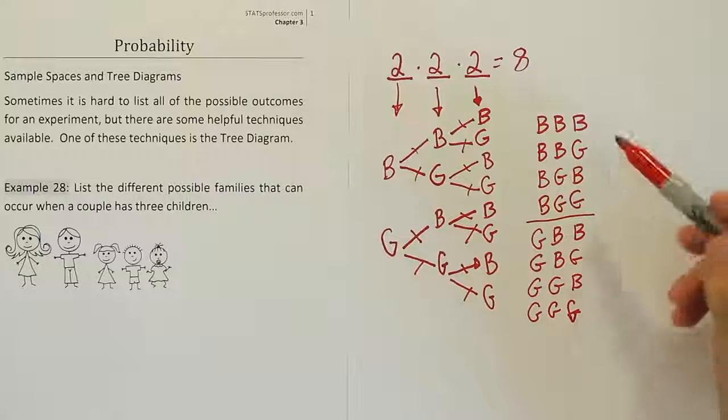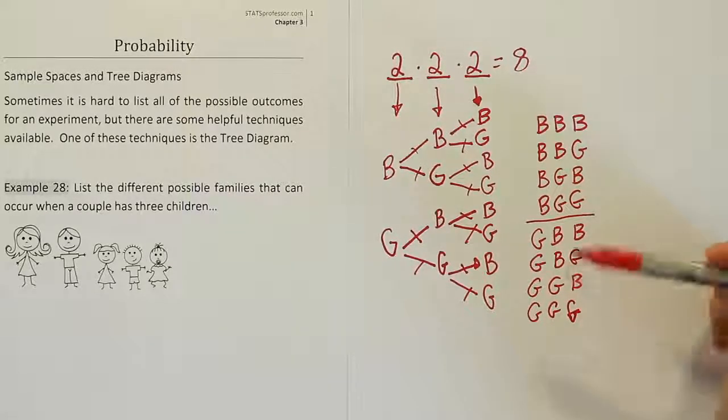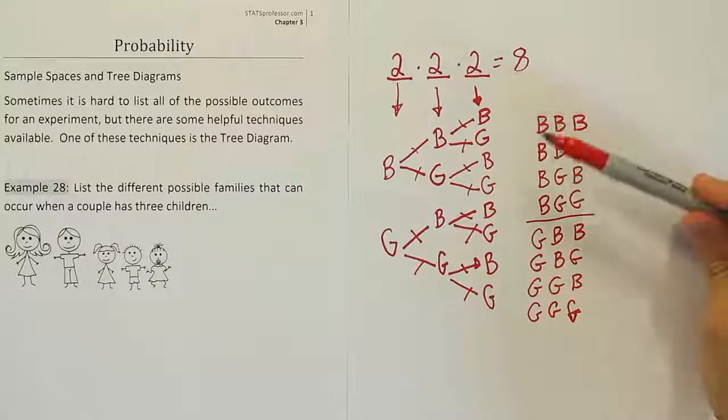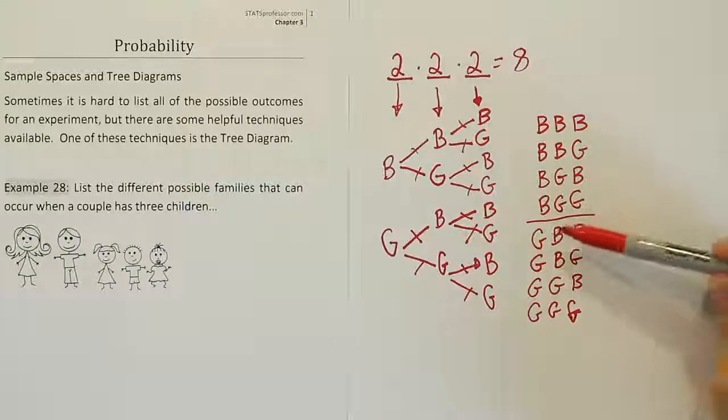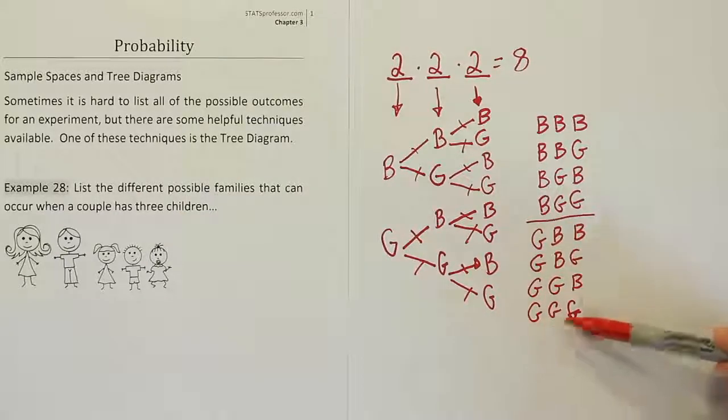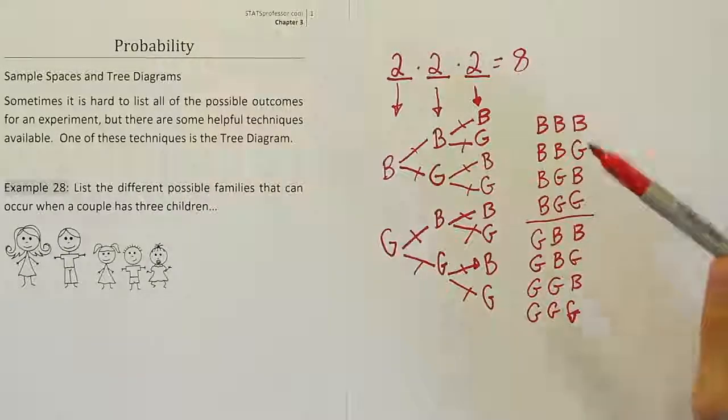So in the end, the possible outcomes are eight total possible outcomes like we said there would be. And this is the list of all the different unique families that can occur based on the sex of the child and the position of birth.